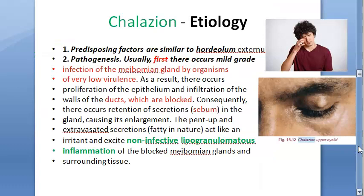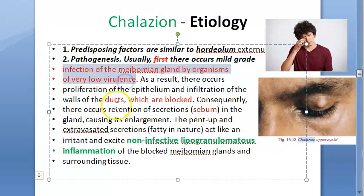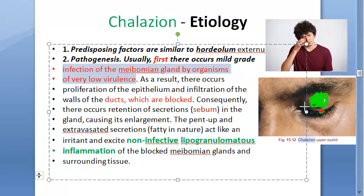Regarding chalazion etiology: people rubbing their eyes introduce bacteria, clogging and irritating the glands. Initially there is a small infection with a low-virulence organism which blocks the duct exit. Then the secretions being made accumulate inside — the lipogranulomatous sebaceous secretions are retained inside, causing enlargement.